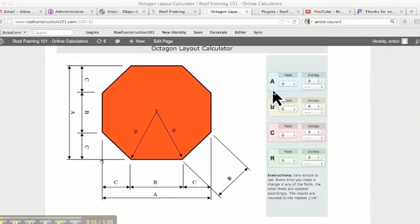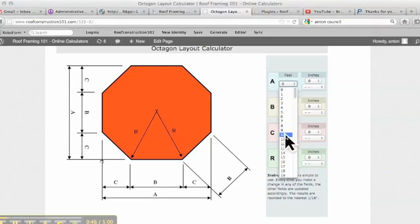And it's really simple. We're going to start with A. And all you would need to do, if let's say that you want an octagon that's 10 foot apart, a 10 foot span, we'll just go ahead and enter in 10 foot.